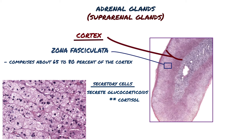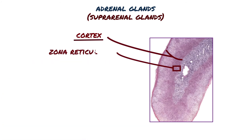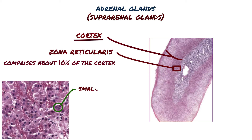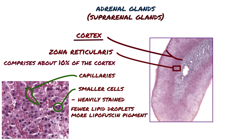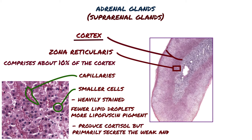Cortisol also suppresses many immune functions and can induce fat mobilization and muscle proteolysis. The innermost zona reticularis comprises about 10% of the cortex and consists of smaller cells in a network of irregular cords, interspersed with wide capillaries. The cells are usually more heavily stained than those of the other zones because they contain fewer lipid droplets and more lipofuscin pigment. Cells of the zona reticularis also produce cortisol but primarily secrete the weak androgens.